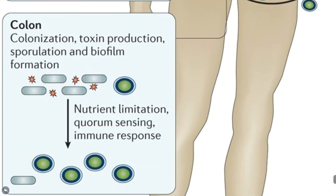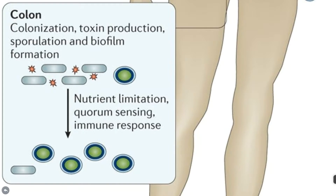In the cecum and colon, C. difficile starts producing spores again, and vegetative cells are excreted by patients during infection. Toxin is produced in the colon.